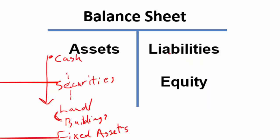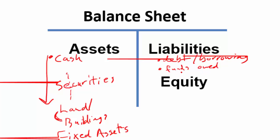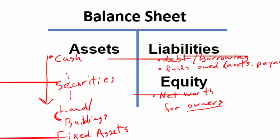On the right side, we could issue liabilities — debt, which is borrowing — in many different forms from simple bank loans, debentures, and bonds. We also account for funds owed to other businesses during normal operations — accounts payable. Then there's equity, which is the net worth after all liabilities are paid, representing how much asset value is left for the owners. In a corporation that would be stockholders; in a proprietorship, the owner; in a partnership, the partners.